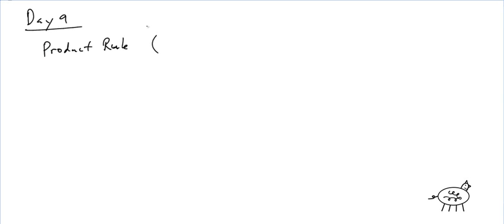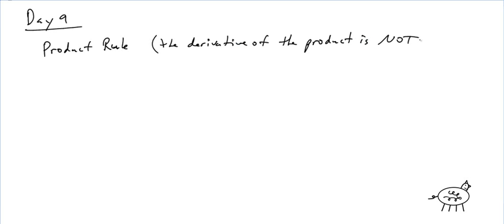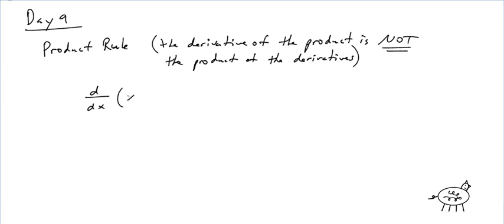And real quickly, the product rule — the derivative of the product is not the product of the derivatives. And the reason I want to show you that is, if I do d/dx of x times x, that's not the same as d/dx of x times d/dx of x.